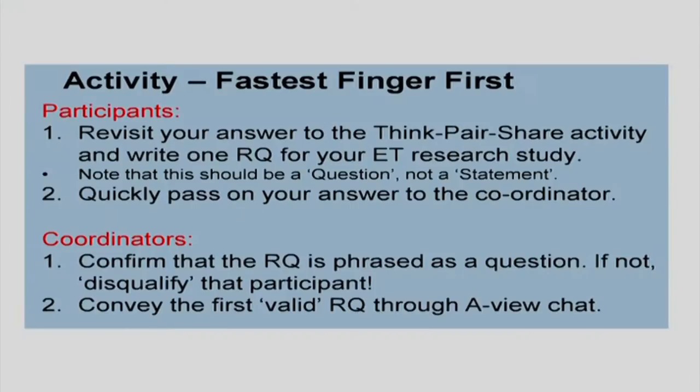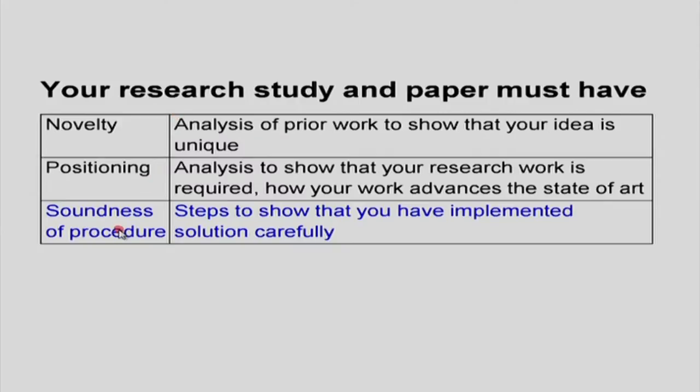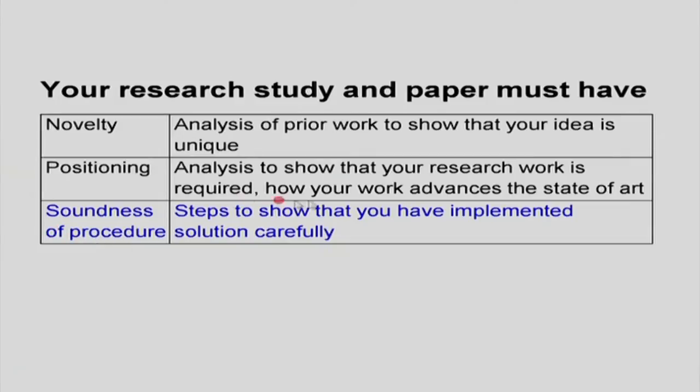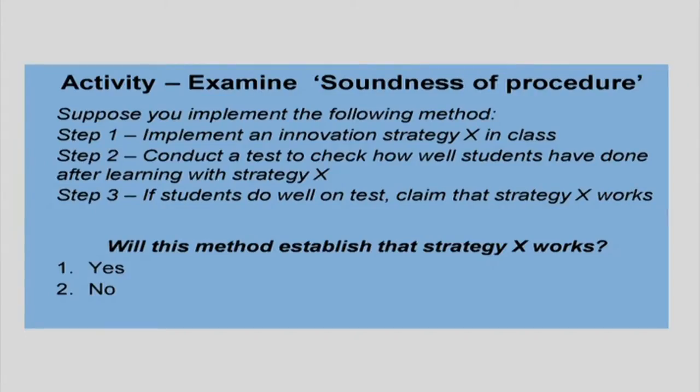Now let us look at another important criterion: soundness. Just like novelty and positioning, your research study and paper must have soundness — essentially, steps to show that you have implemented your solution carefully. Like any scientific experiment, if your steps are not implemented carefully, the study ceases to be valid and your inferences will not be considered strong. Let us look at one or two examples of soundness.